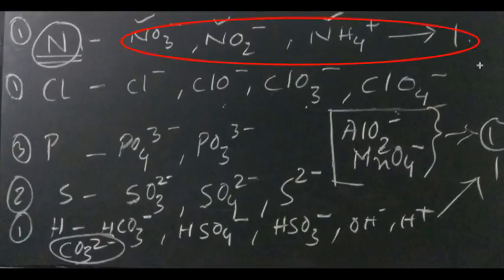If we just see this one, any anion - nitrate, nitrite and NH4+ that is ammonium ion. All these are having nitrogen associated with it and are having the valency of 1.